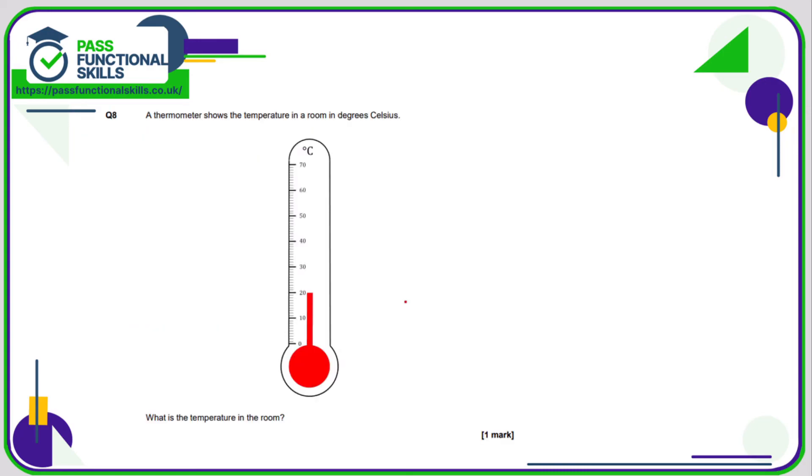And question number eight: what is the temperature in the room? Well, the thermometer is going all the way up to 20. So that's a temperature of 20. And is it Celsius or Fahrenheit? In fact, we're told in the question, this is degrees Celsius.